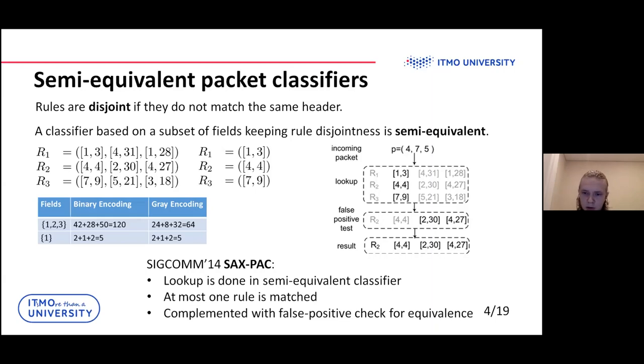For incoming packet, we can check only first parameter and define which rule matches this packet. But after we check only first rule, we also can accept some packet which previously don't match the found rule.